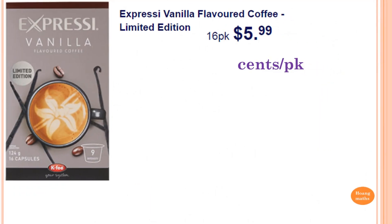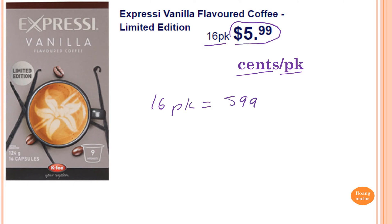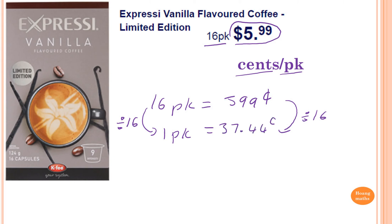This one here: 16 packs for five dollars and ninety-five cents, and we want to convert to cents per pack. So 16 packs equals five hundred and ninety-nine cents. I want one pack, so from 16 to one I divide by 16, and on the right side I also divide by 16. Five hundred and ninety-nine divided by 16 gives me thirty-seven point forty-four cents. So that means thirty-seven point forty-four cents per pack. That's the simplest rate.